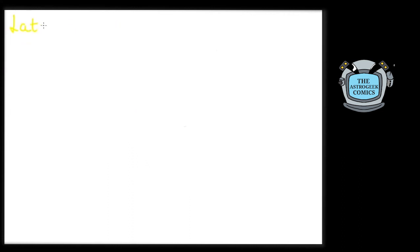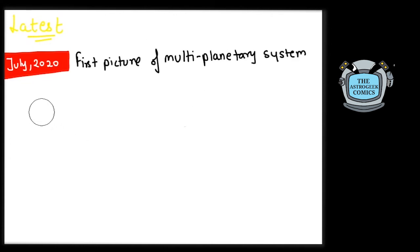One of the latest major feats in this long journey was made very recently as of the date of the making of this video. In July 2020, the first direct image of a multi-planetary system around a Sun-like star was taken, when two exoplanets were photographed around the star TYC 8998-760-1.